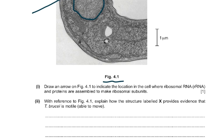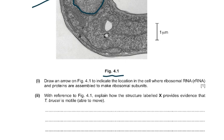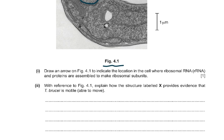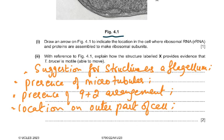With reference to figure 4.1, explain how structure X provides evidence that T. brucei is mobile, able to move. The answer is: it has a flagellum, with the presence of microtubules in a 9+2 microtubule pattern, located on the outer part of the cell. It has a circular cross-section suggesting a tubular structure, hence it could be the flagellum and looks cylindrical. The key points are: structure X is a flagellum, presence of microtubules in a 9+2 arrangement, located on the outer part of the cell.